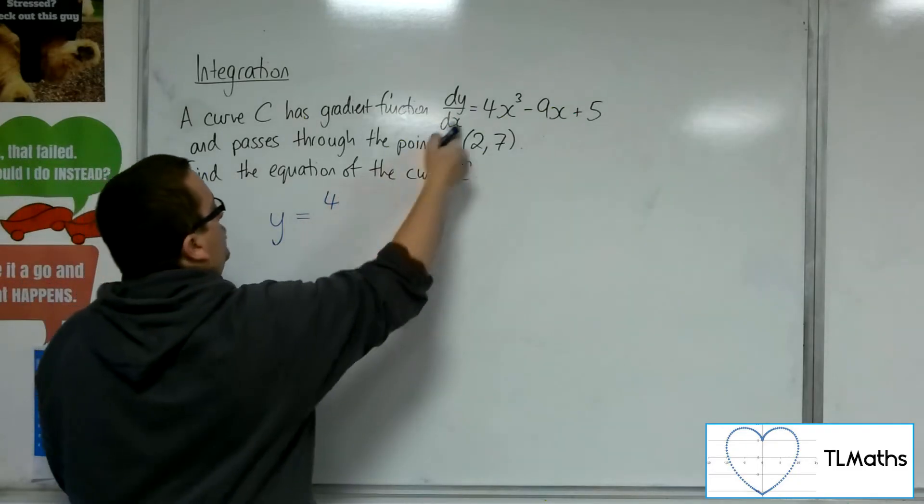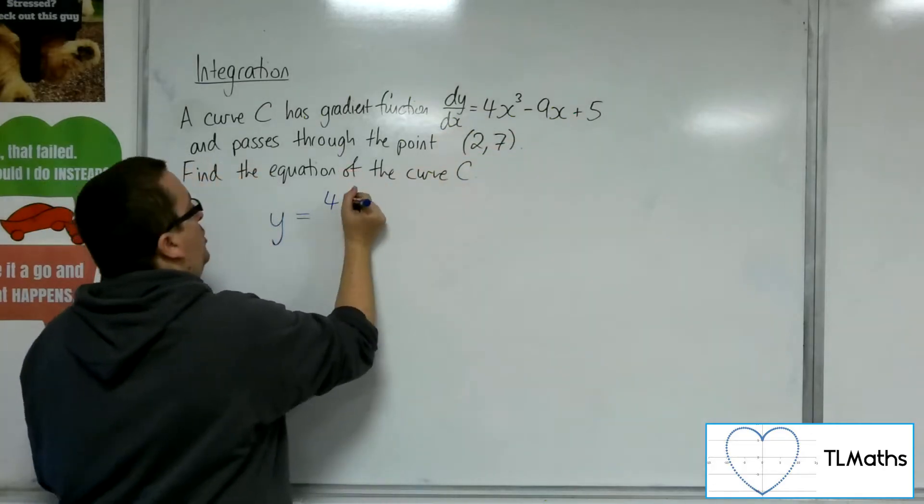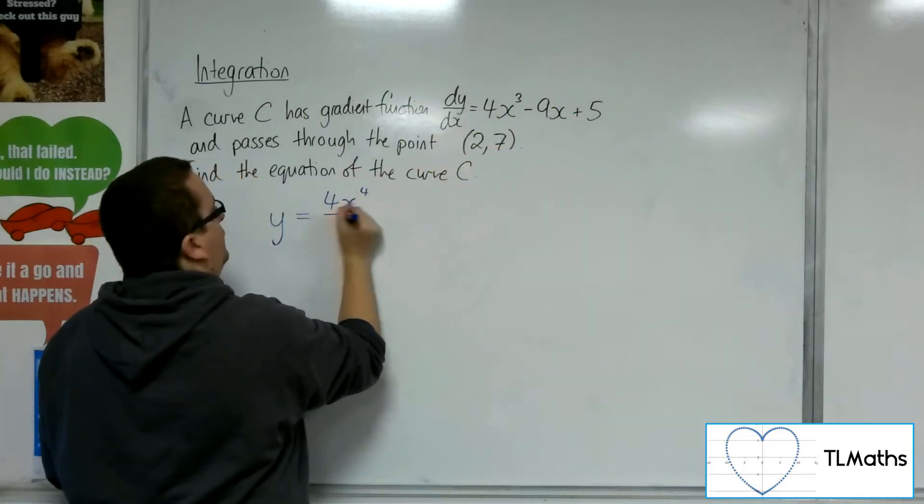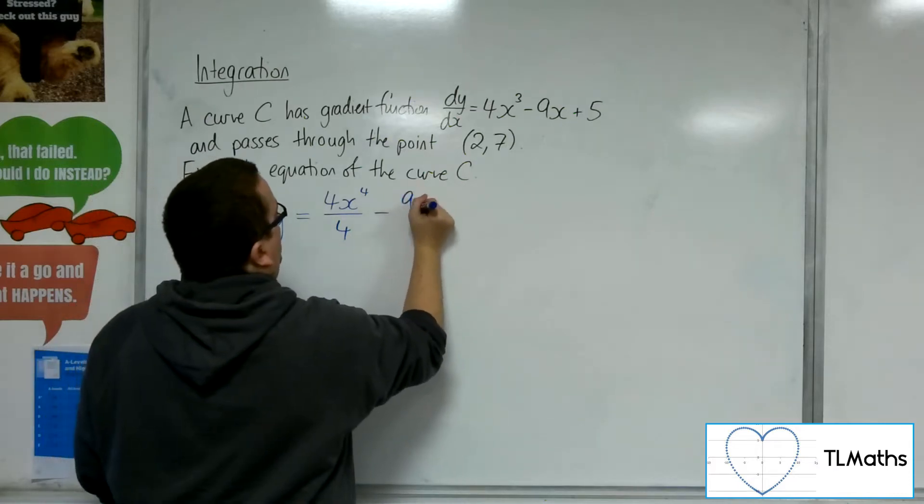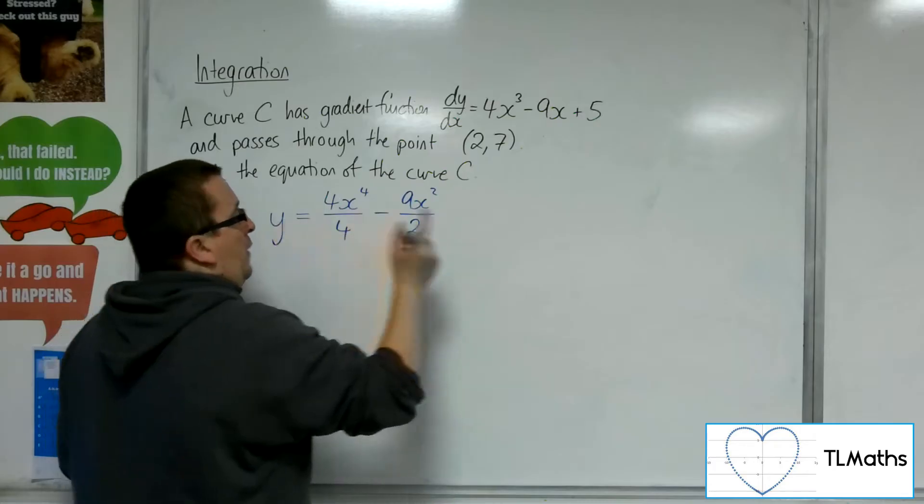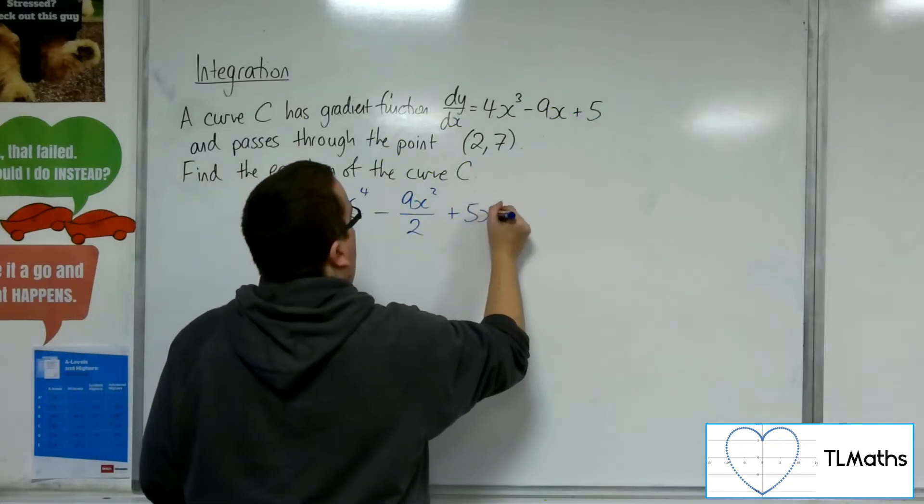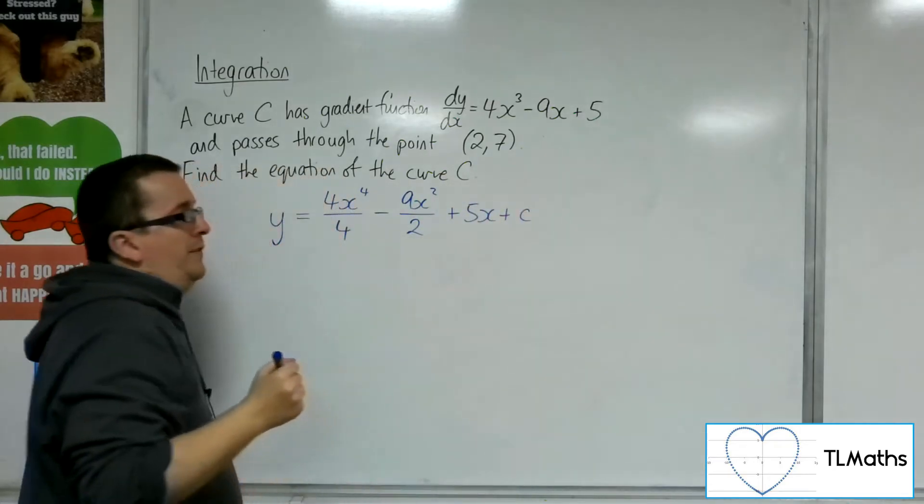So we are going to integrate each of these terms individually. So 4x³, we're going to add 1 to the power and divide by the new power. The minus 9x, add 1 to the power, divide by the new power. The 5 becomes 5x, and we've got that plus C constant of integration.